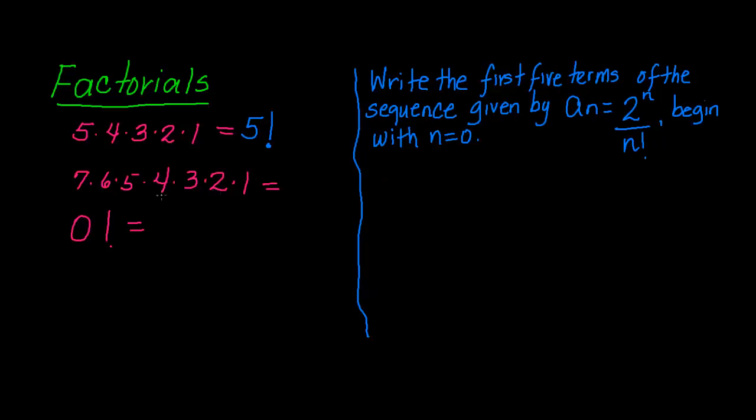1. We can shorthand this and write it in a short way by writing 7 factorial. And by that definition, 0 factorial is equal to 1. So any time you see 0 factorial, that will equal 1.